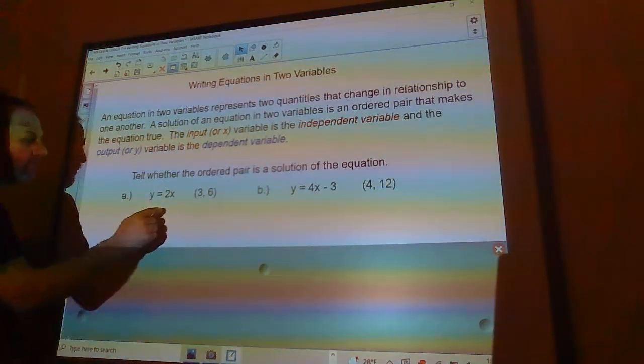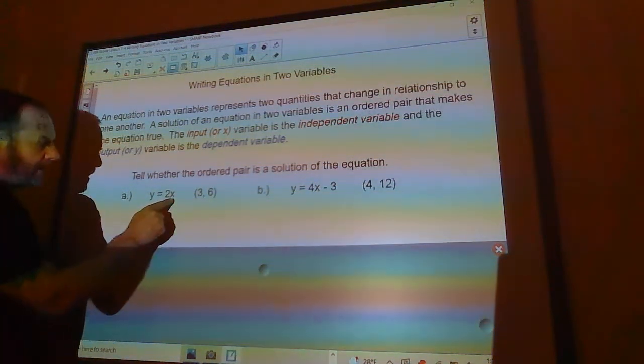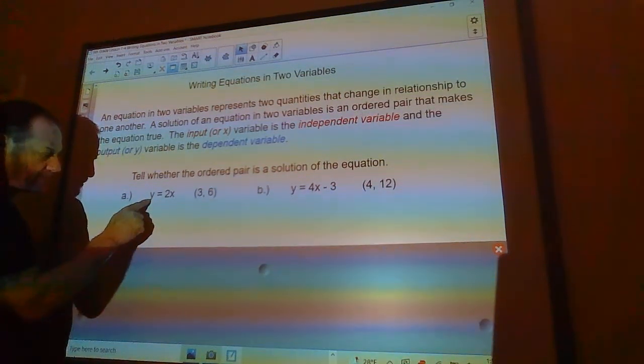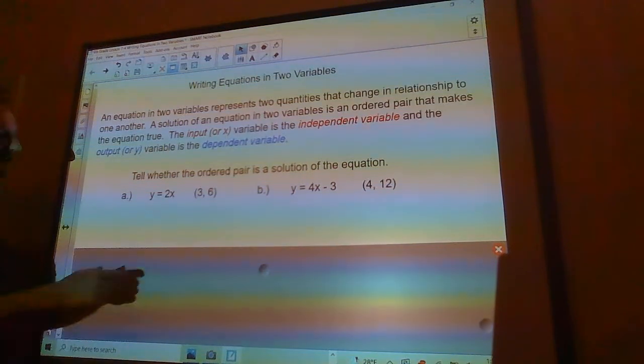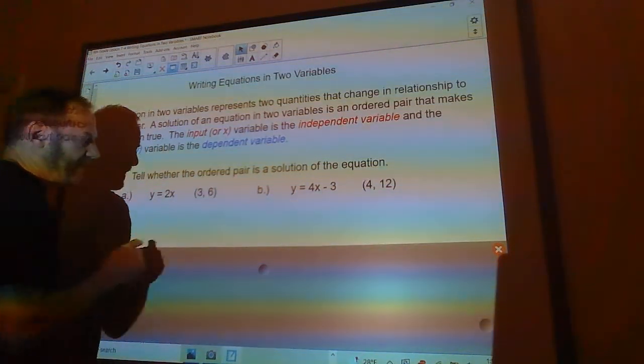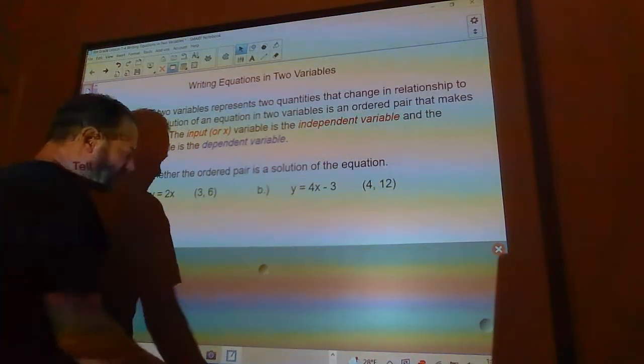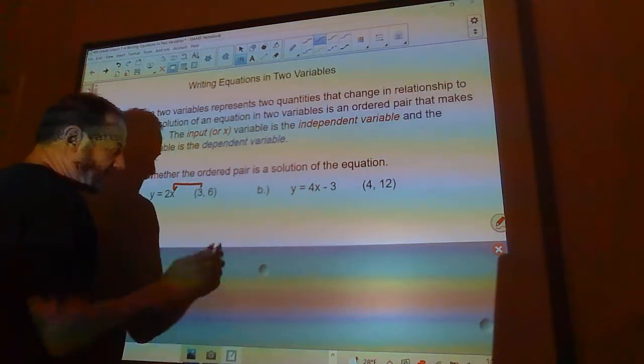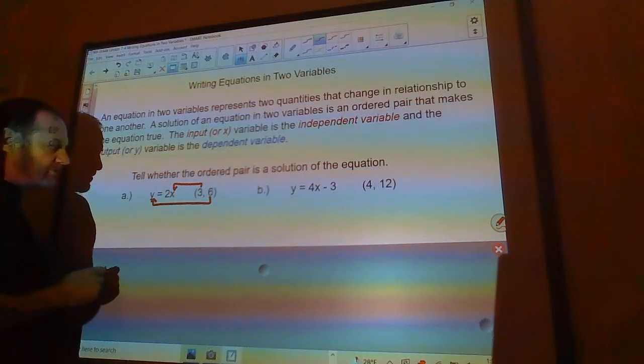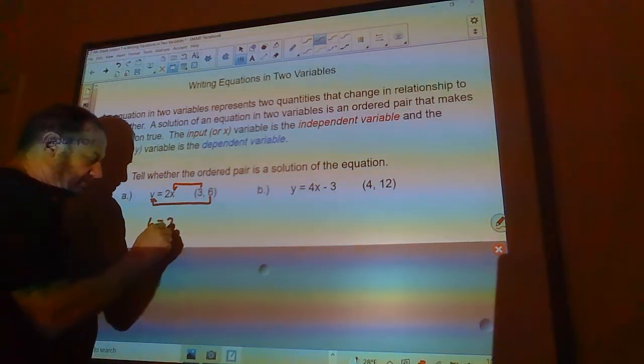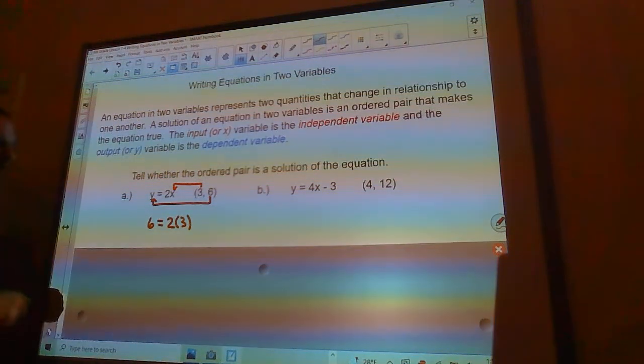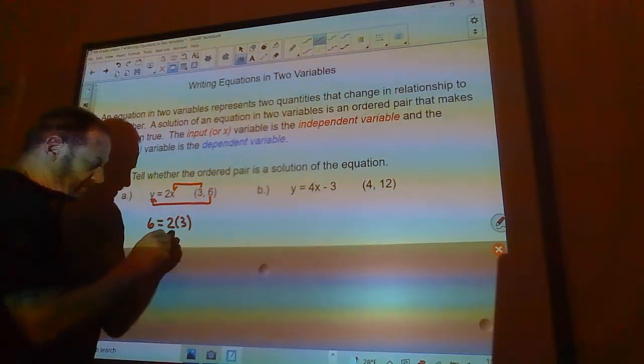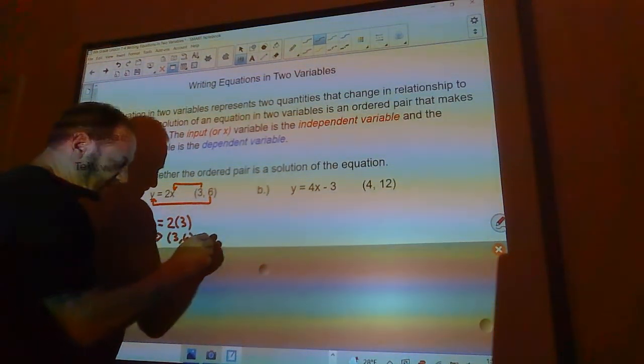So this is an example right here, y equals 2x. Here is my independent variable x, that's my input, and then my dependent variable is the y, that's my output. So the question is, is this ordered pair, which is always x, y, the x always comes first, is that a solution to the equation. So what I would do to check that is I would take the x coordinate and put it in for x, and then I would take the y coordinate and put it in for y and see if this is a true statement. So this would say that 6 is equal to 2 times 3. And yes, that is true because that would be 6 equals 6. So this implies (3, 6) is a solution.